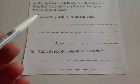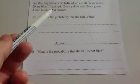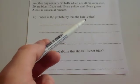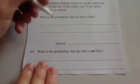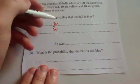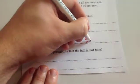And finally, we've got a bag that contains 50 balls, all of the same size. 20 are blue, 10 are red, 10 are yellow, and 10 are green. What's the probability that a ball is blue? So there's 20 blue, and there's 50 altogether. So it's 20 out of 50, or 20 fiftieths. Let's cancel this down. So if we divide by 10, you get 2 fifths. So the answer would be 2 fifths.